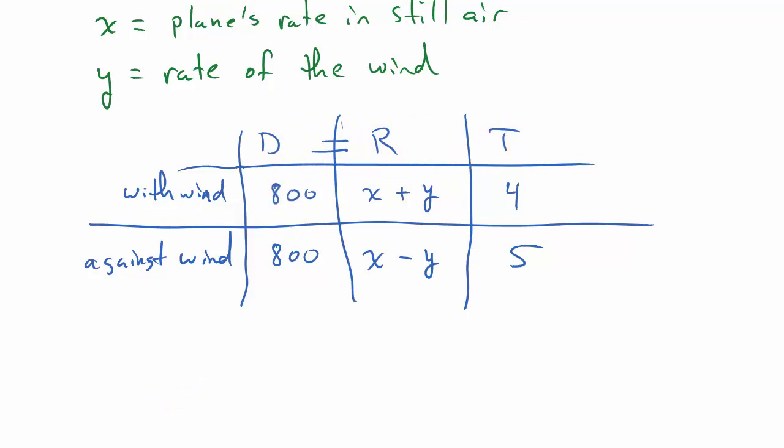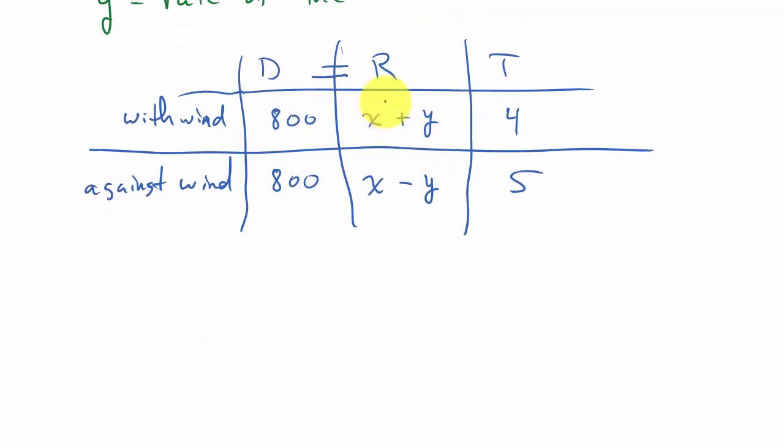So you know that distance is equal to rate times time. So what we have here is a system of equations. So I'm going to do rate times time. So that's going to be four times the rate, that's the time times the rate is equal to the distance. Equals x plus y times four. And then my system for against the wind, it's rate times time. So five times x minus y is equal to distance.